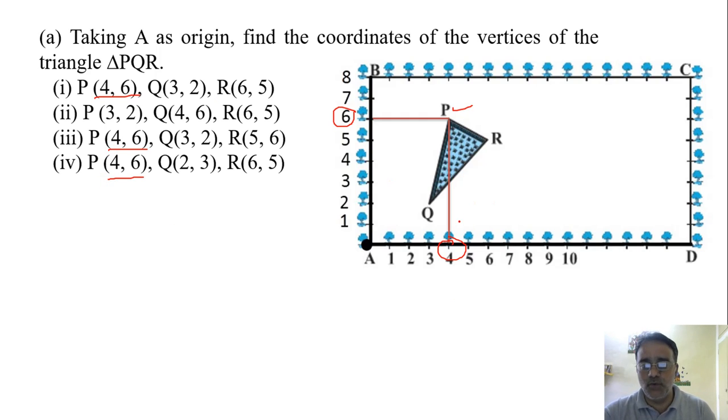Now the next point is Q. The point Q, the x coordinate of point Q is 3 and the y coordinate of point Q is 2. So the coordinate of Q is 3, 2 and 3, 2 is in two options, this one and this one.